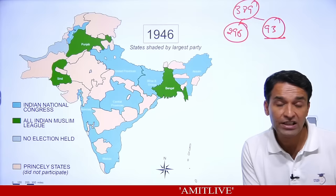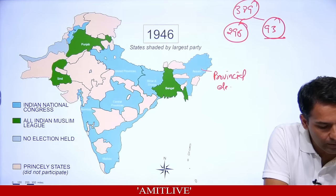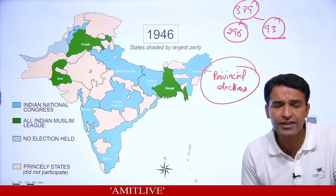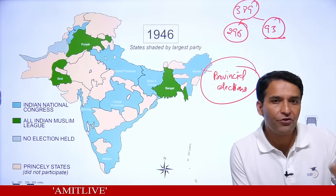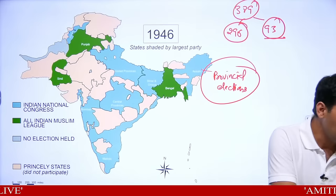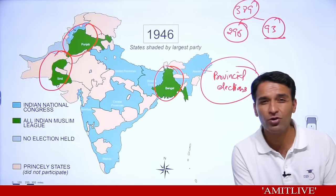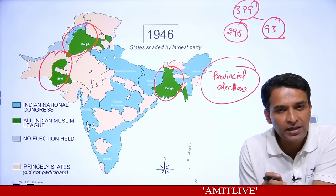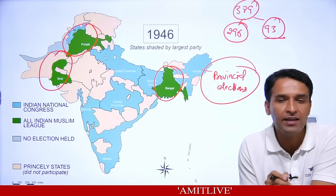In 1946, provincial elections happened. Sky blue areas had Congress majority, green areas had Muslim League majority. Look at those areas — where the Indian Muslim League won, those were the areas that were partitioned. Where Congress had majority, those areas were not partitioned. So Central Provinces, Bombay, United Provinces, Bihar, Odisha, Madras, Assam — all these states had Congress majority.